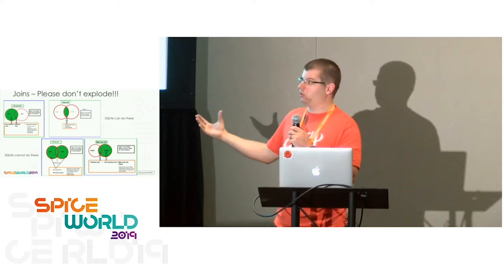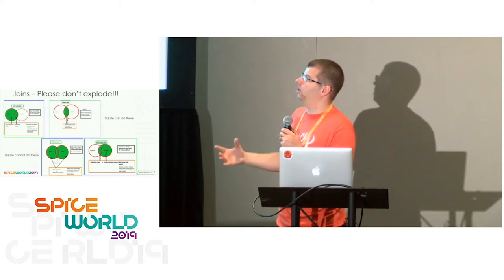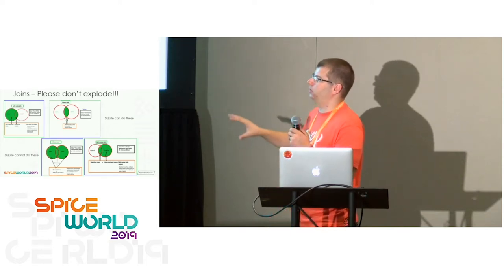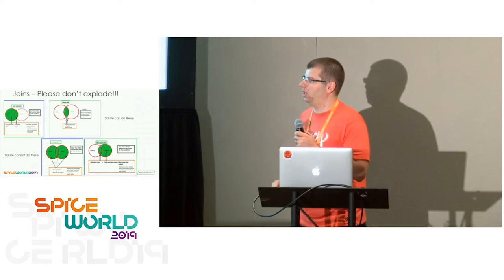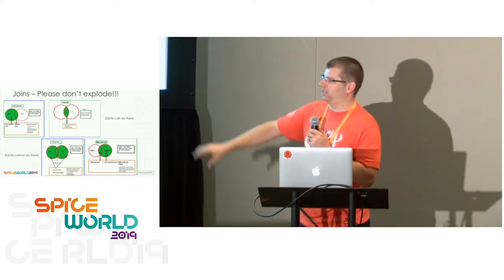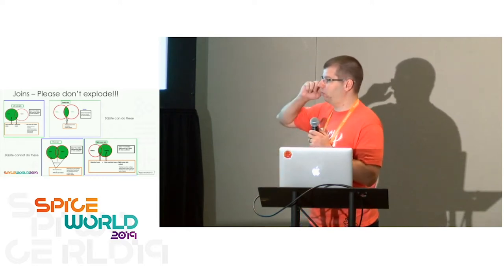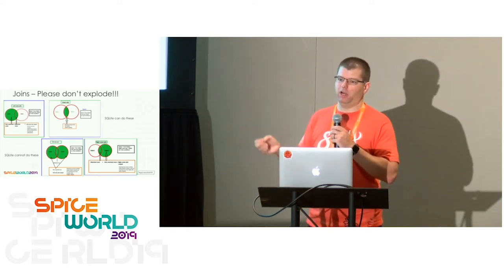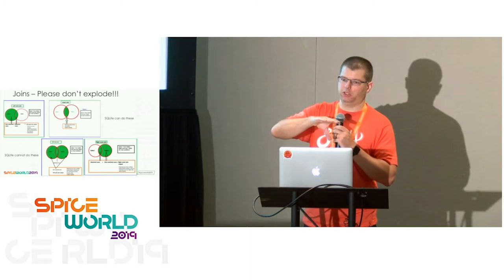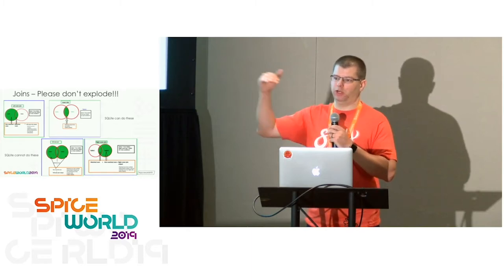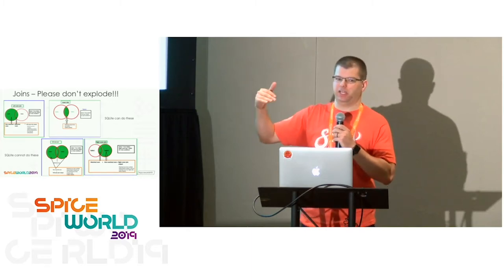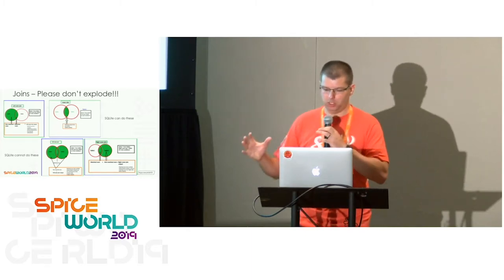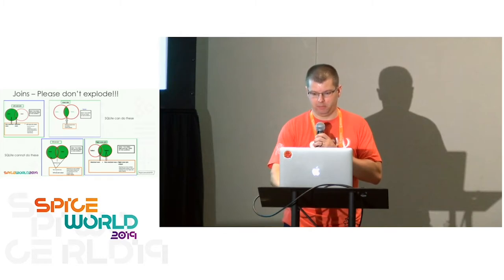SQLite can do the top two types of joins — inner and left outer. It can't do the bottom two, but the full Postgres can, so Helpdesk Server may allow you to do that. An example of joining two tables: I want everything from the users table and I want to know all the devices they have.